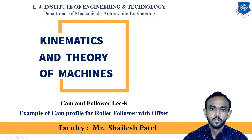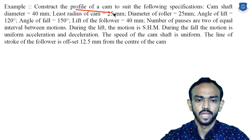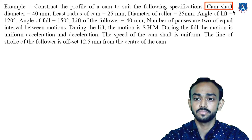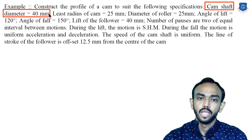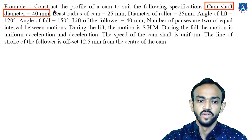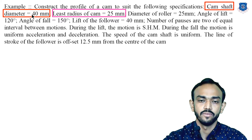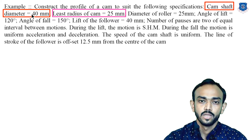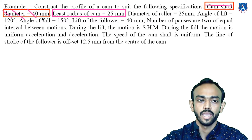Let's start this example. The given data is: construct the profile of cam to the following specifications. The cam shaft diameter is 40 mm. Remember that in cam profile, cam shaft diameter is not relevant because they always give it to confuse students. The cam shaft radius is not important for us — we are not using this data at any point.